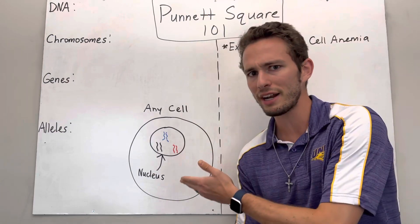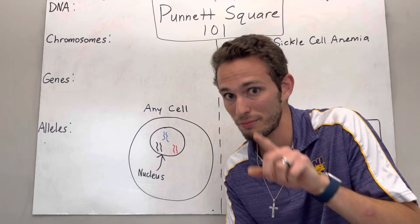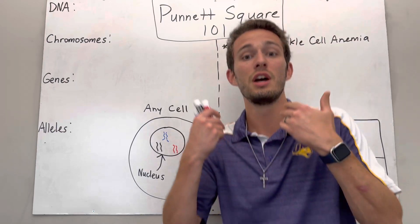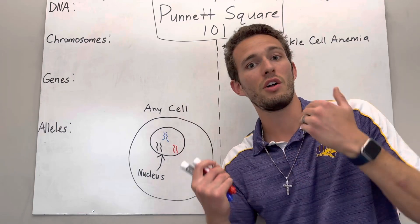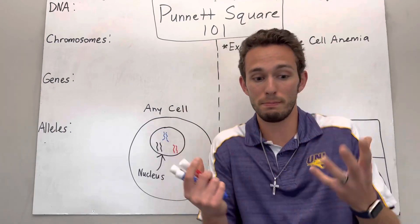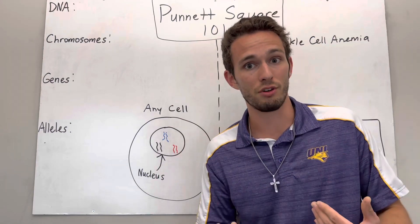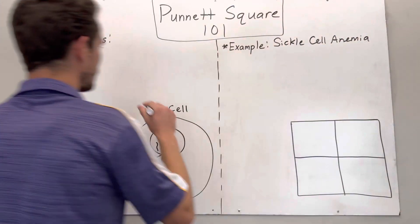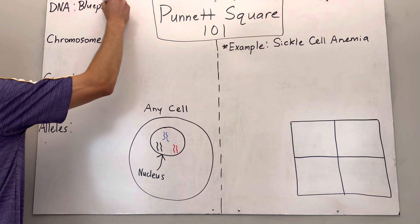Our bodies are made of cells — 30 trillion tiny little units inside your body right now that all have certain shapes, sizes, and structures to help them with certain functions. They all read from the same little manual that we call DNA. DNA is the blueprint of how those cells know how to build themselves — how your skin cell builds itself, how your heart cells build themselves, etc. They need a blueprint in order to understand how to make it, and that is called DNA.